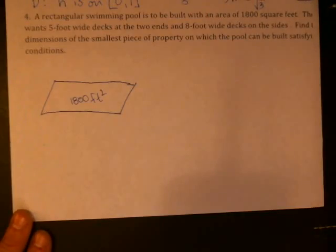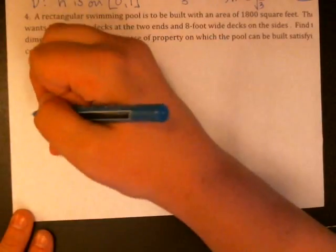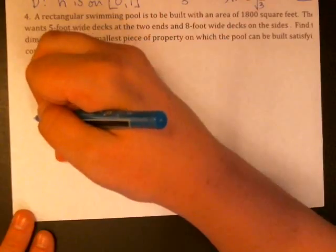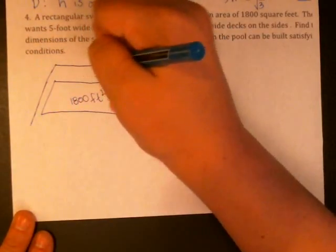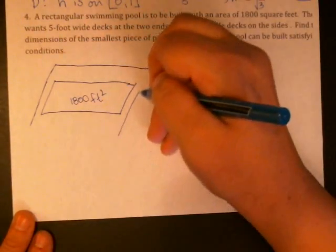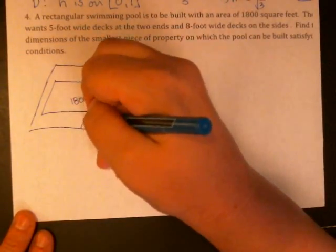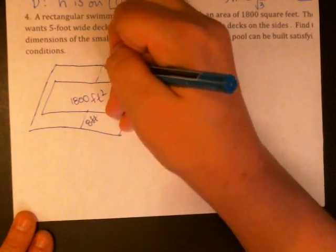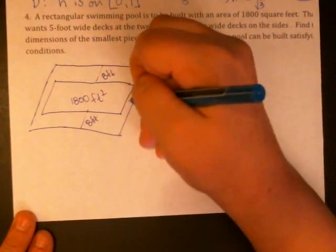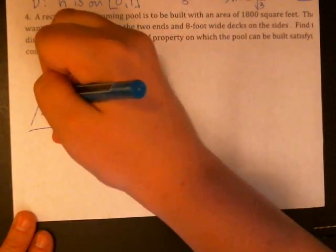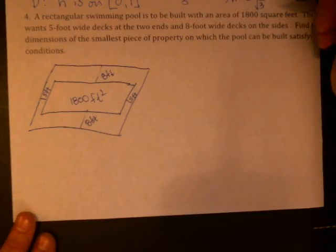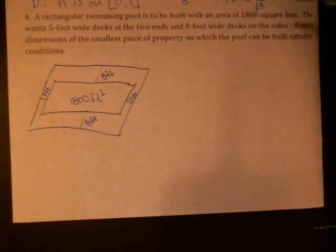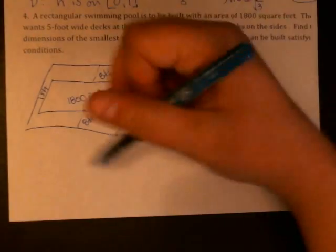The owner wants five foot wide decks at the two ends and eight foot wide decks on the sides. So let's say this rectangle can change shape, but let's say this is the five foot ends and this is the eight foot ends. So this has to be eight, eight, five, five. We want to find the dimensions of the smallest piece of property that the pool can be built on and still satisfy these conditions.